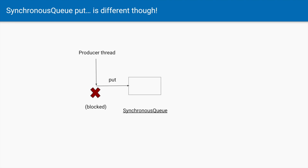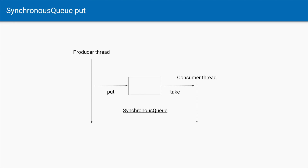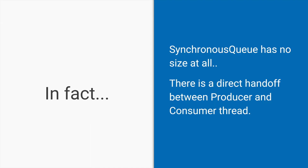Where synchronous queue is slightly different from the blocking queue is in the put operation. When the producer thread tries to put an element into the synchronous queue, even though the synchronous queue is empty, the producer thread gets blocked. That is because the producer thread waits for the consumer thread to come and get the element. As soon as there is a consumer thread which calls a take operation, the producer thread gets unblocked, puts the element into the synchronous queue, and the consumer thread proceeds further.